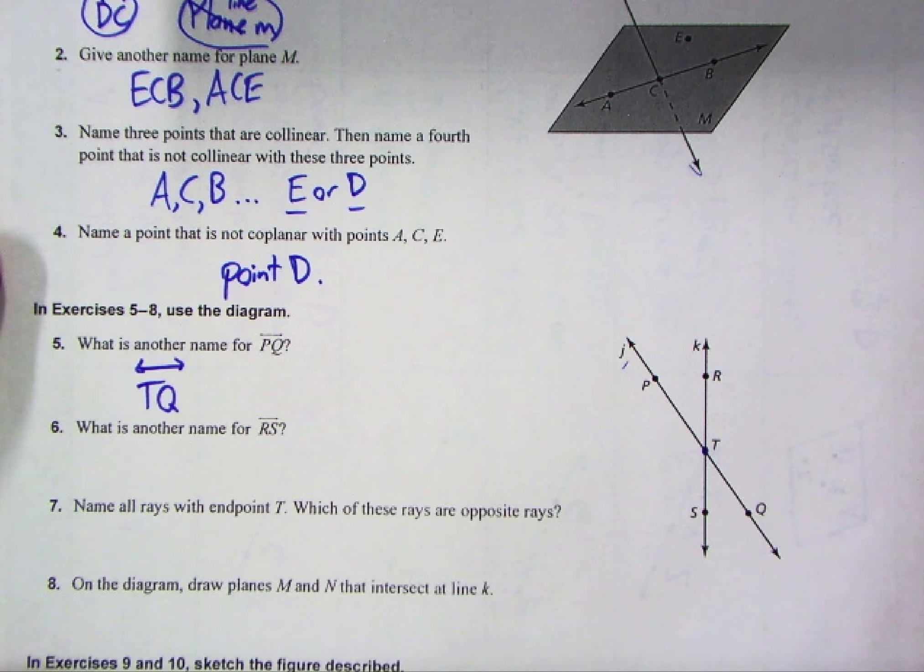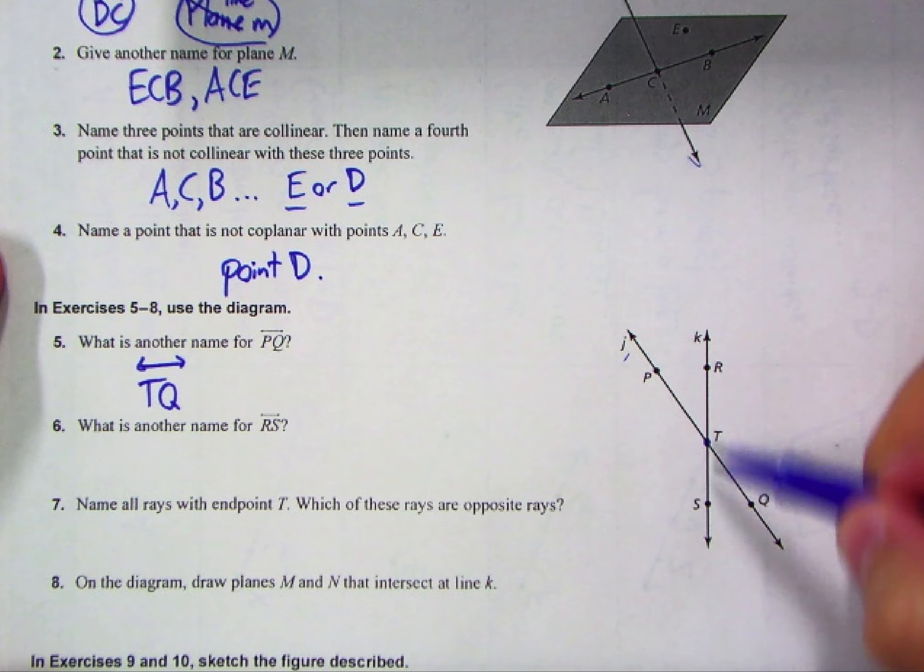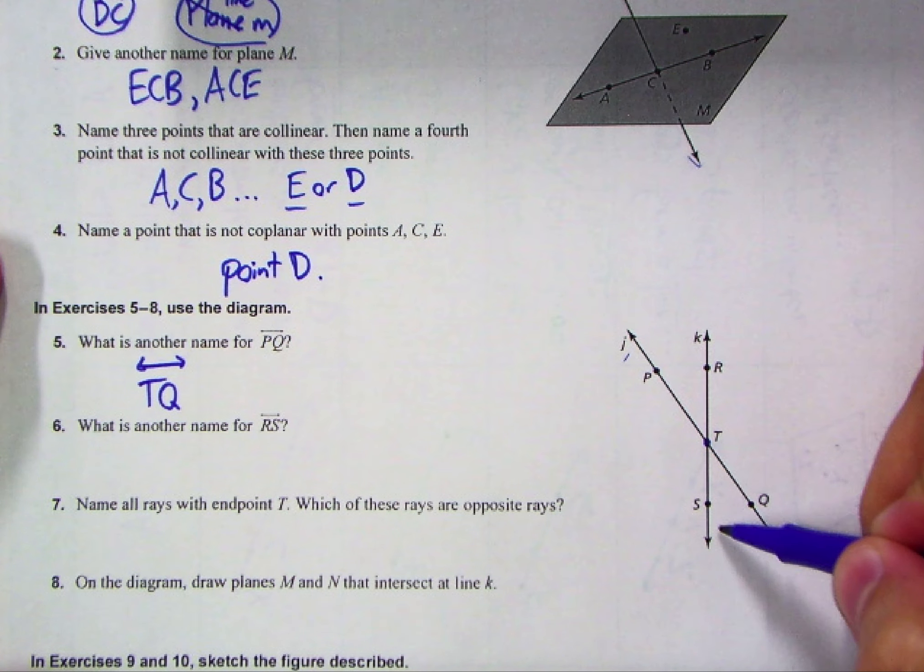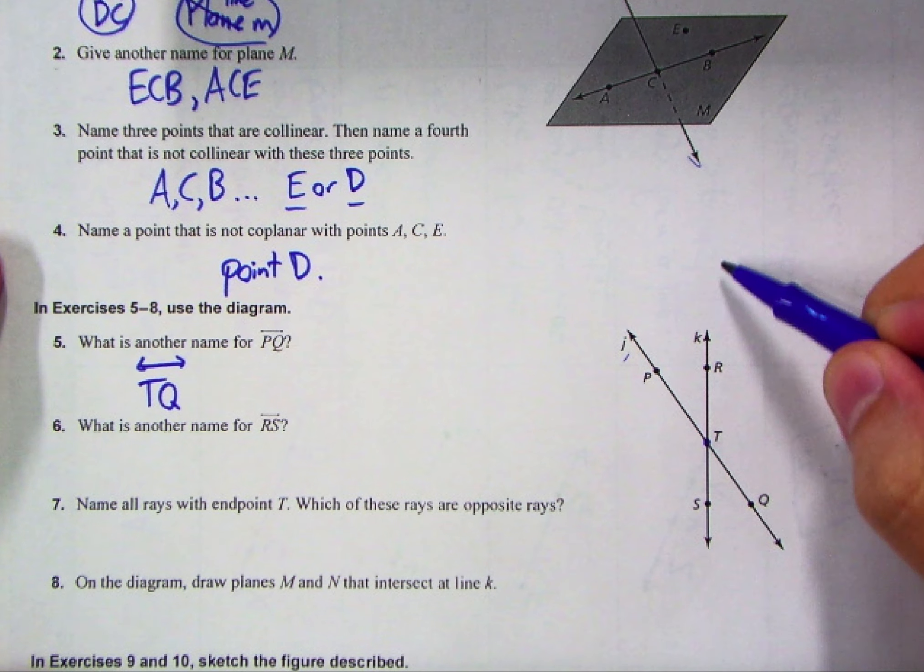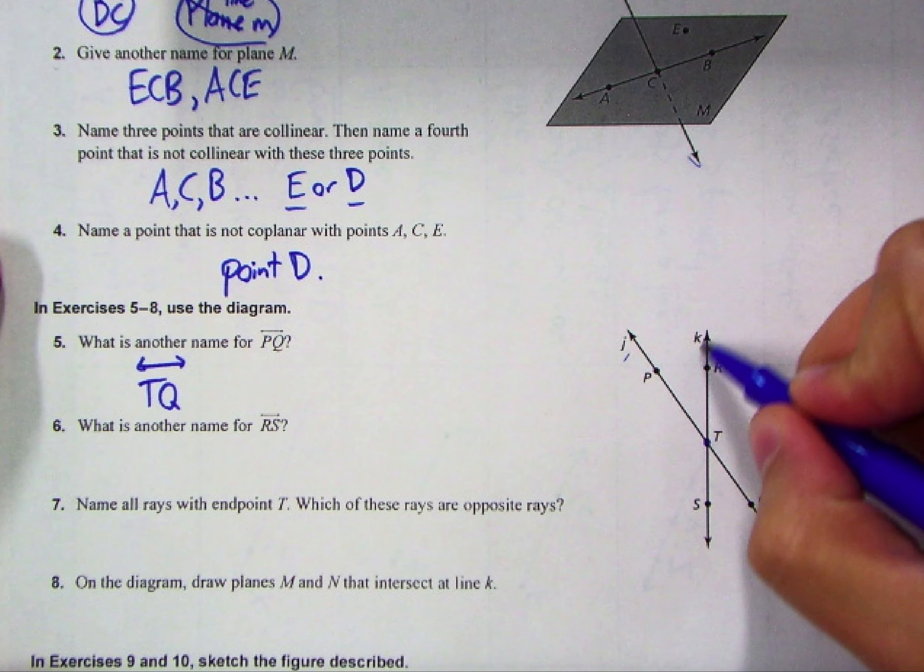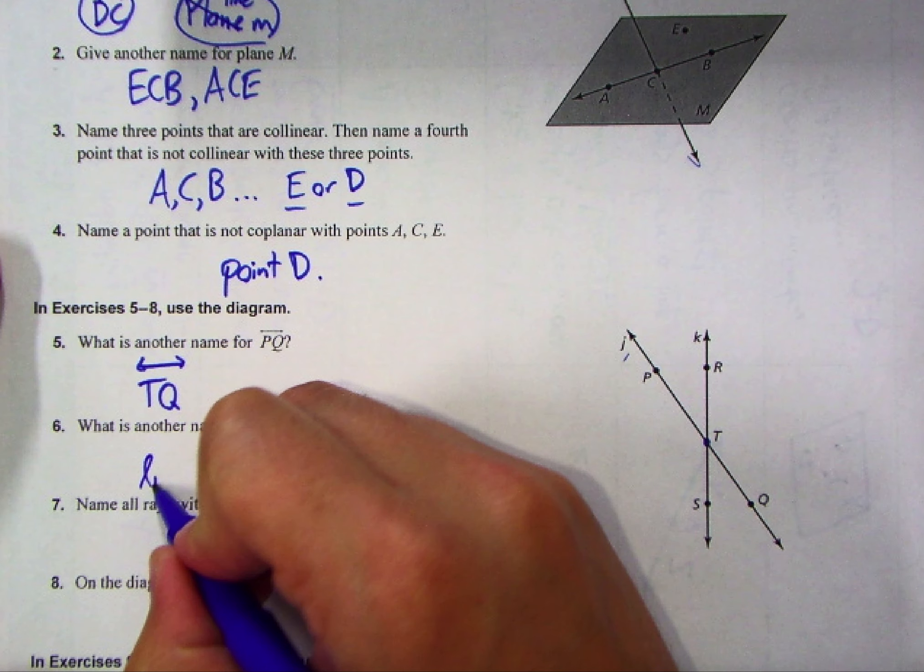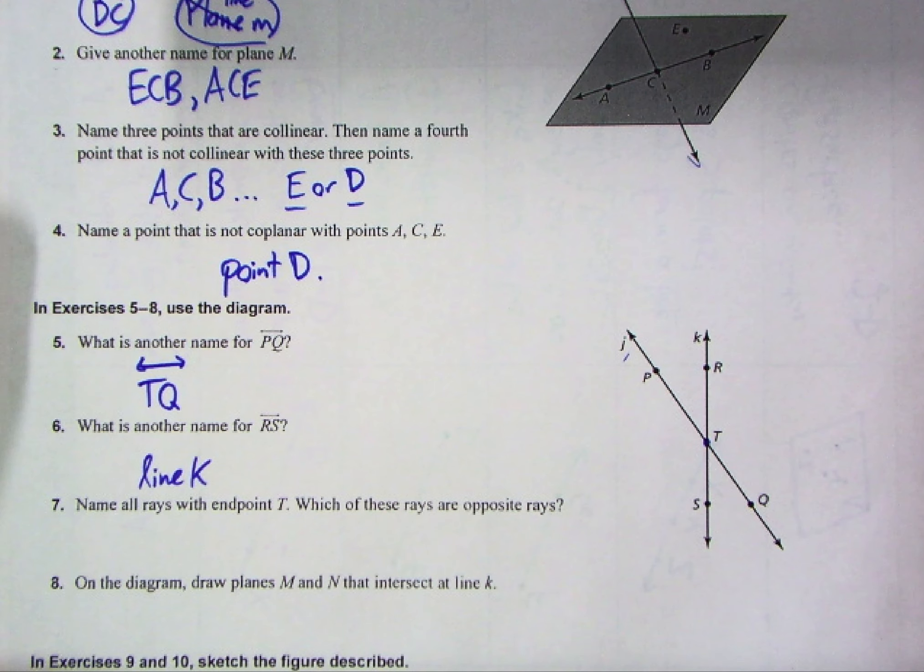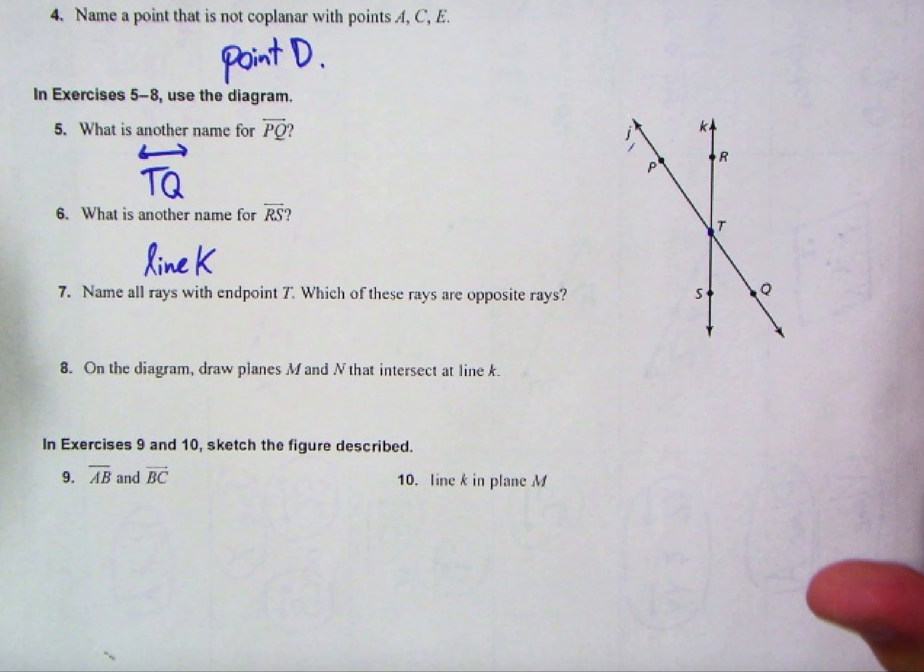All right, what is another name for line RS? Well, the same kind of thing can happen here. I could pick RT, TS, they all are part of the same line. Or a really easy method would just be line K. After all, it's next to one of our arrowheads.